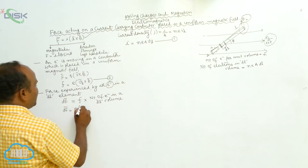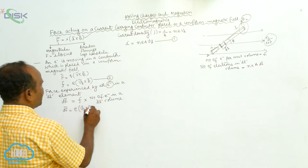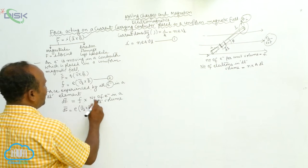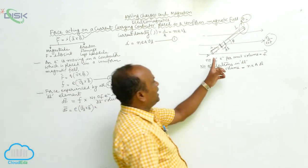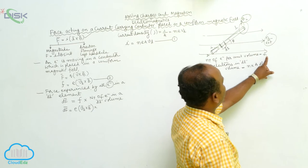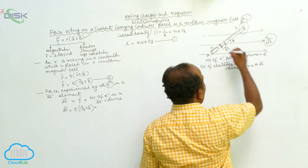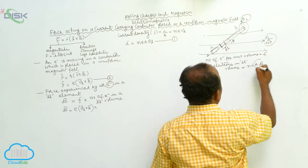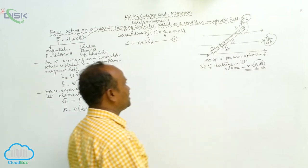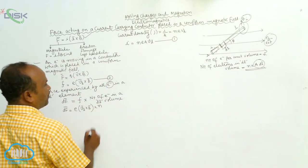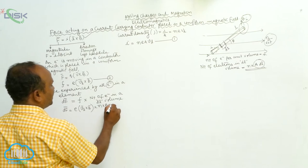The force F equals E into VD cross V̄, multiplied by the number of electrons in a DL volume. Number of electrons per unit volume is N, so the number of electrons in a DL volume equals N into A into DL, where A into DL is the volume of the length element.